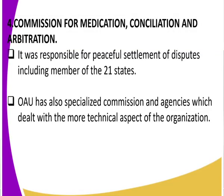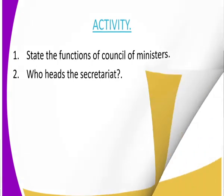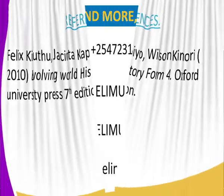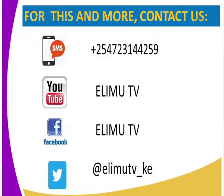We have now looked at the structure of OAU — the Assembly of Heads of State meeting, the Secretariat, and the ministerial meetings. Can we state the functions of the Council of Ministers, who heads the Secretariat, and where the offices are? For reference, consult the Evolving World: History and Government book by Oxford University Press, seventh edition. As always, the station you're watching is Elimu TV, your favorite learning station where you get to watch and learn. Stay tuned.